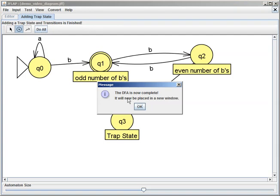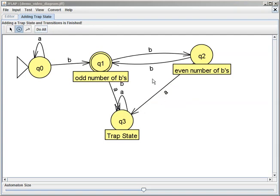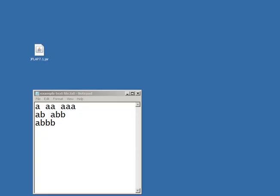What we're gonna do now is we're gonna click 'do all' and check it out. It said 'the DFA is now complete' and we're gonna open it in another window. You couldn't see it because it opened it up in another place on my screen.